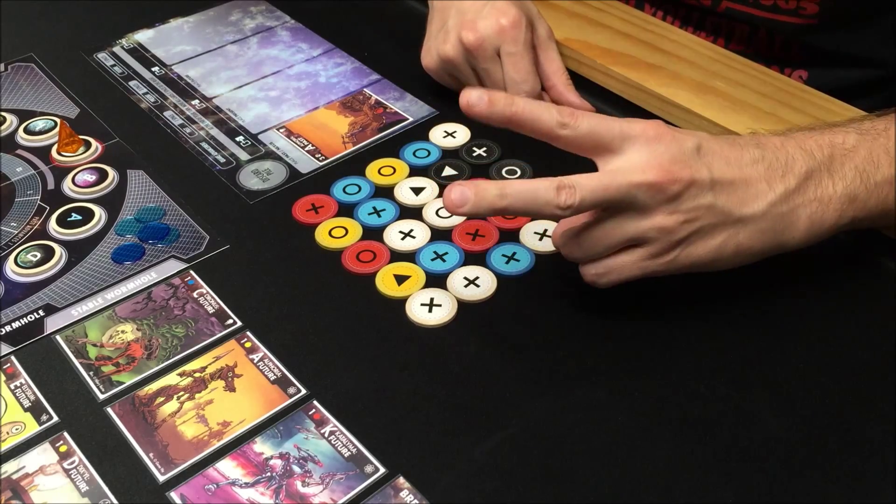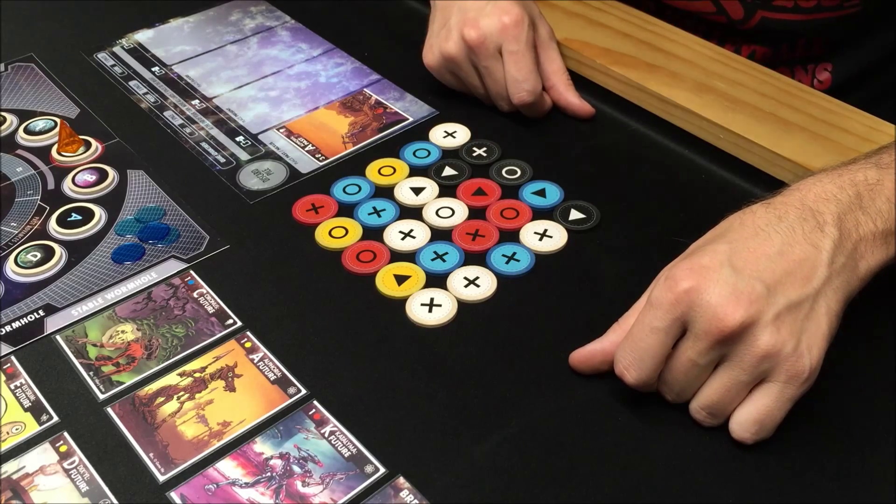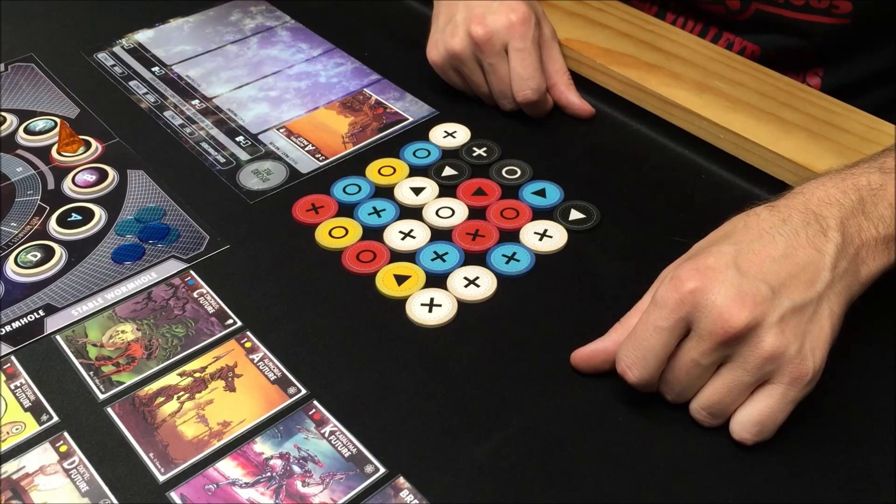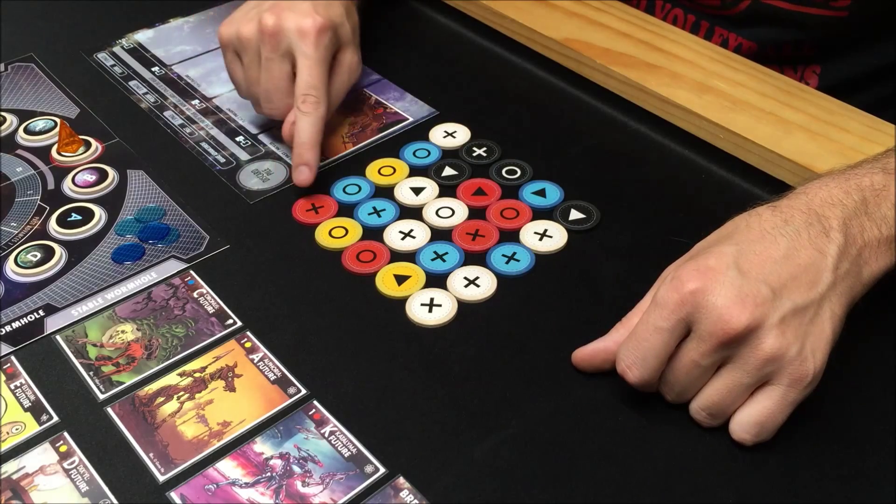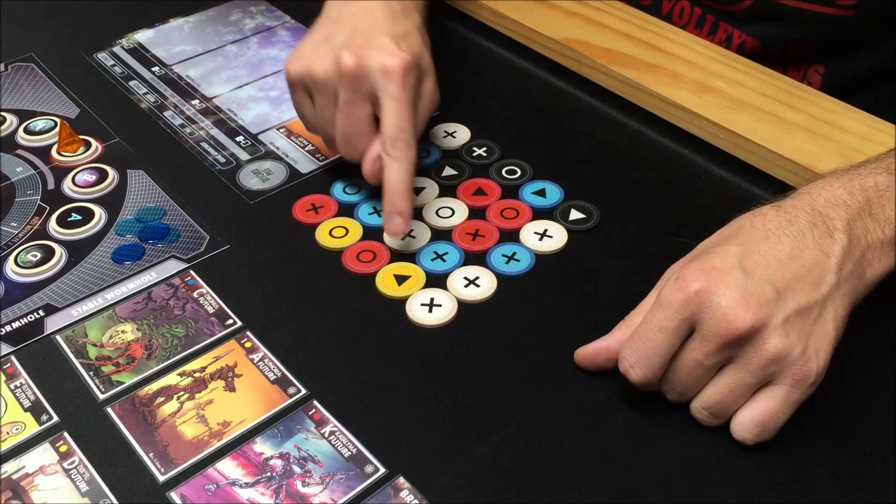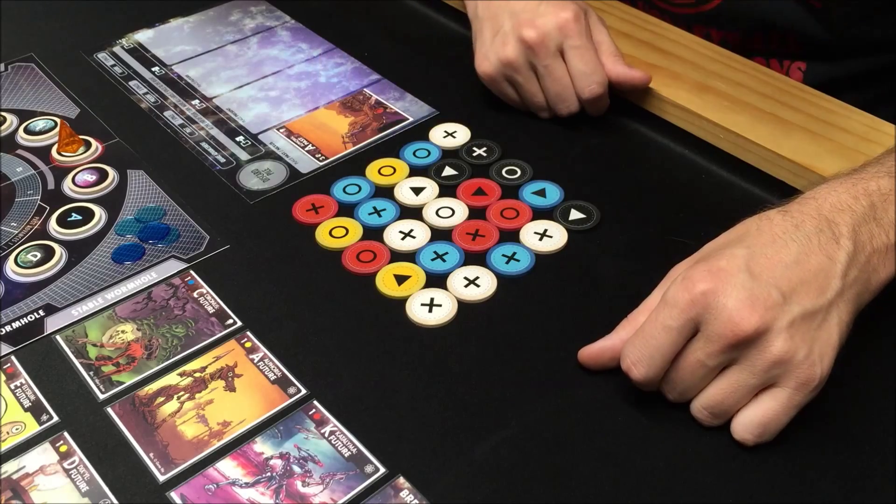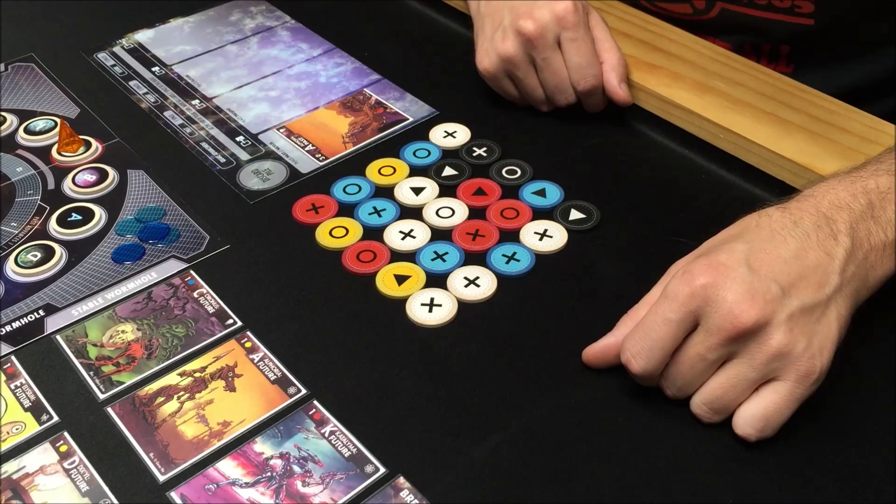At the beginning of your turn during the matrix phase, you're going to get two actions. With an action, you can swap any two discs as long as they have the same symbol. There is an X, a circle, and a triangle.